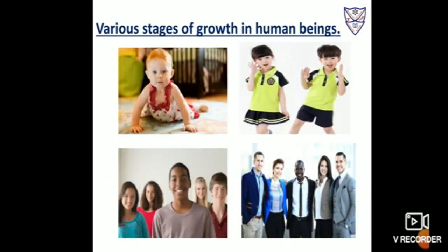Let us discuss about the various stages of growth in human beings. There are four stages: infancy, childhood, adolescence, and adulthood. Infancy means from birth to two years. From two to eleven years is considered childhood. From eleven to eighteen or nineteen years is adolescence. More than nineteen years is called adulthood.